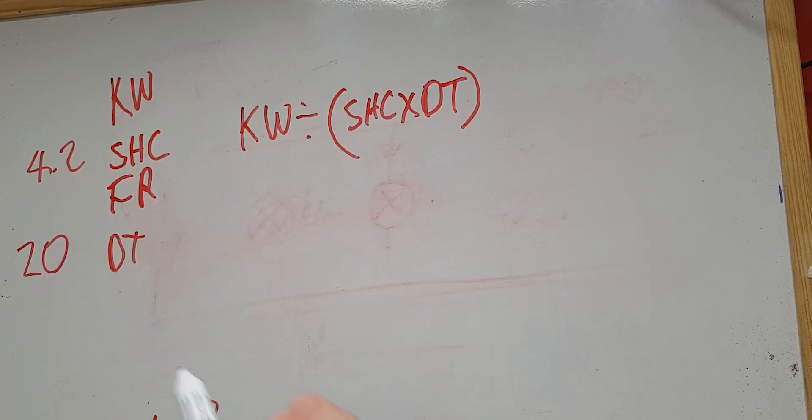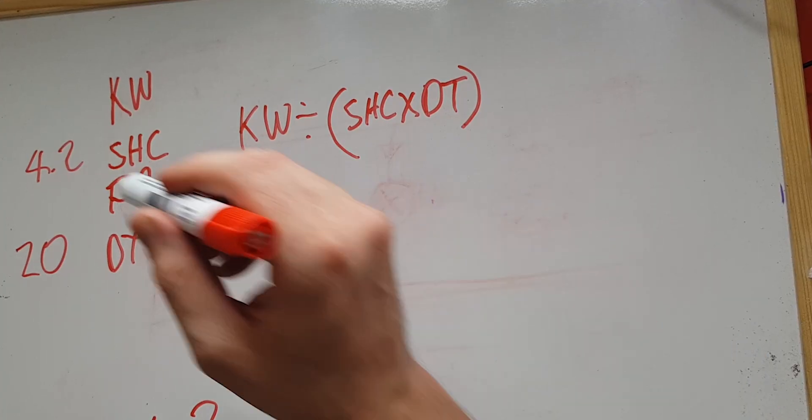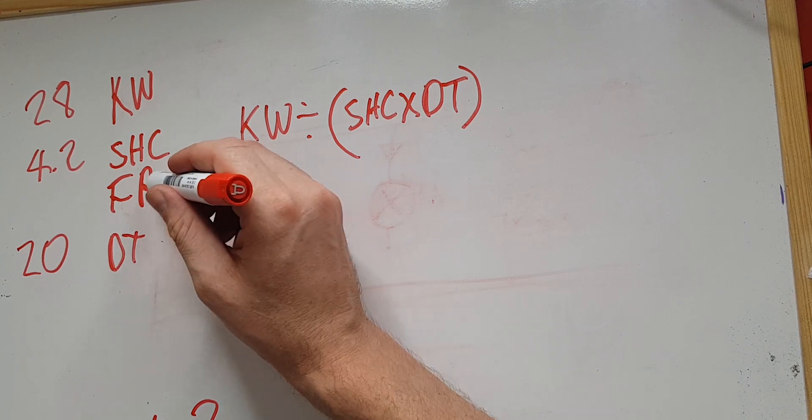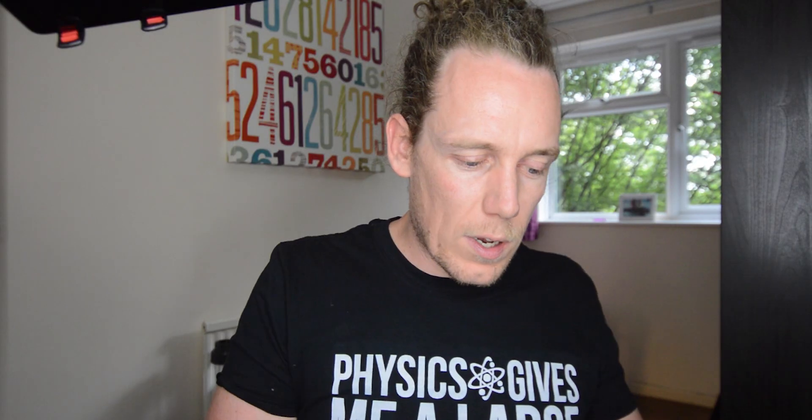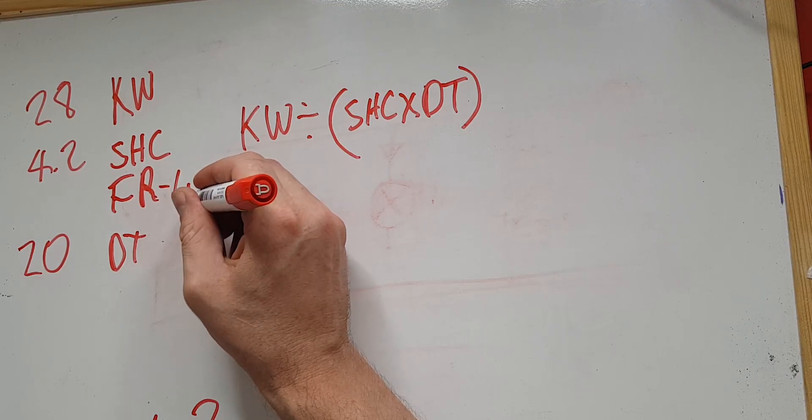Delta T, as we said, is temperature difference. Generally across a boiler or radiators, we want a delta T of 20. Kilowatts is how much energy we think is going to be needed in that room or that house. So let's do a whole house for this example — we'll use 28 kilowatts. So what's going to be left if we use all of those factors is our flow rate, and in this form we're going to end up with the flow rate in liters per second.